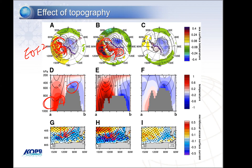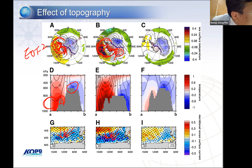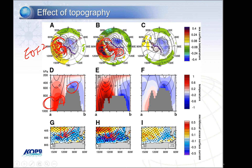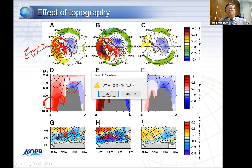One of my grad students, Doyle, had a paper out recently about the Amundsen Sea Low being set by the topography of the Antarctic ice sheet — it reminds me of his work, the way you flattened Antarctica and then changed West Antarctic topography.